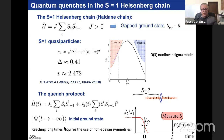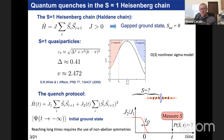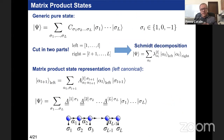We want to reach relatively long times to see features due to the quasi-particles created during the quench, and measure the distribution of spin as a function of time. Let me say a few words about the methods we use. Yesterday I saw presentations showing many interesting fields, so some may be familiar with these methods, others not. I'll give a simple introduction.